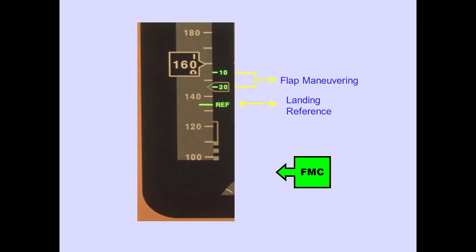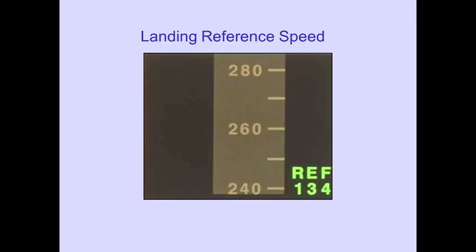Recommended flap maneuvering speeds for specific flap settings will be displayed below 20,000 feet. The current flap setting speed and next retracted flap setting speed will be displayed. The landing reference speed is also displayed. The selected flight management computer provides this information. If the landing reference speed is below the displayed tape speed values, an REF and the reference speed is displayed.